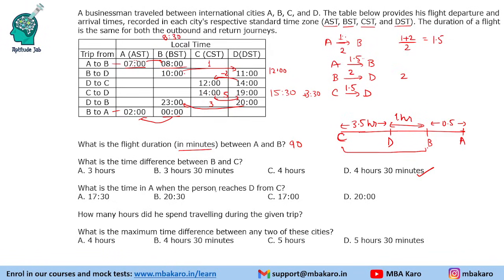Question: What is the time in A when the person reaches D from C? The person reaches D at 19:00. D is 1 hour and 30 minutes behind A. So we add 1 and a half hours to 19:00, which gives 20:30 — that is 8:30 PM.